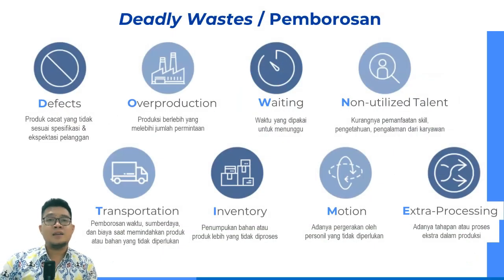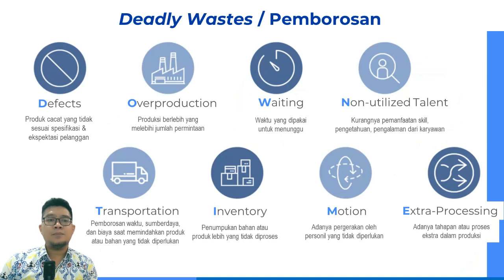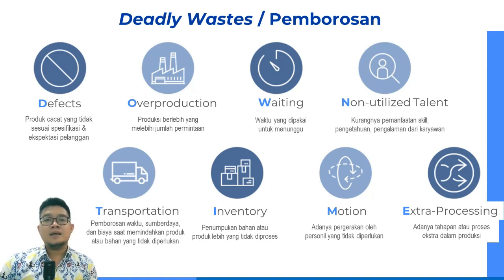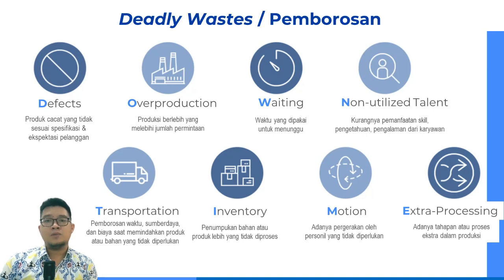Dalam industri sangat dihindari yang namanya pemborosan. Terdapat delapan jenis Deadly Waste. Yang pertama adalah Defect, yaitu produk cacat yang dihasilkan yang tidak sesuai dengan spesifikasi ataupun ekspektasi dari pelanggan. Kemudian yang kedua ada Over Production atau produksi berlebih, yaitu dihasilkannya produk yang melebihi dari jumlah permintaan. Yang ketiga ada Waiting, yaitu waktu yang dipakai untuk menunggu. Yang keempat adalah Non-Utilized Talent, berarti terdapat karyawan yang tidak sesuai pada tempatnya, dalam hal ini kurangnya pemanfaatan skill, pengetahuan, dan pengalaman dari karyawan.